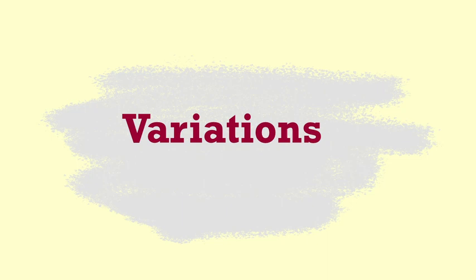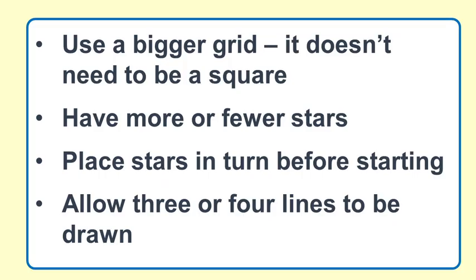There's a whole lot of variations that you can do for this. So you can have a bigger grid, which means that people will need to get bigger scores, will need to use some of the more challenging multiplication facts such as seven eights and eight nines and so on. And the grid does not have to be a square. It could be a whole page of paper and you can have more or fewer stars. The more stars you have, the smaller the rectangles are and the easier it is. So fewer stars makes it more of a challenge.